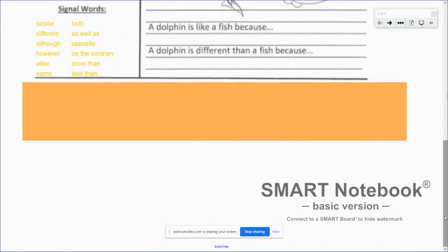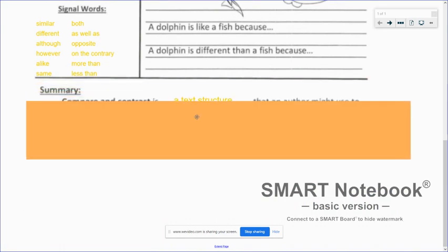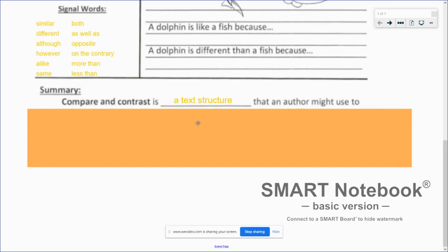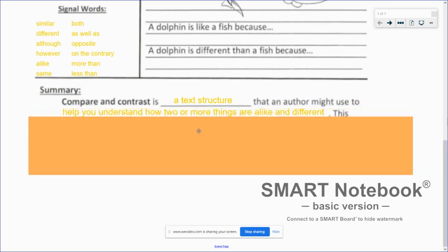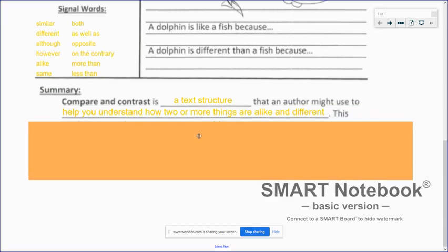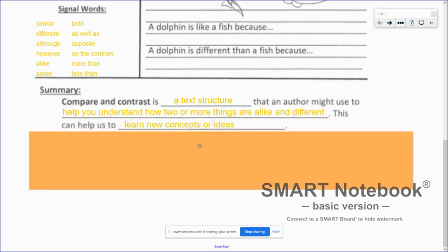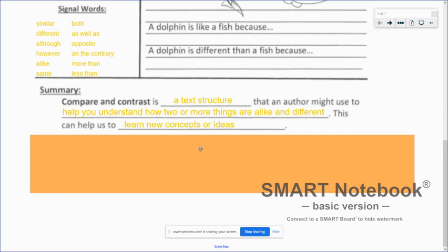And this last section is the summary at the bottom. So the summary, compare and contrast is a text structure that an author might use to help you understand how two or more things are alike and different. This can help us to learn new concepts or ideas. So take a moment and fill in the bottom section of your notes.